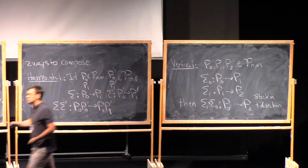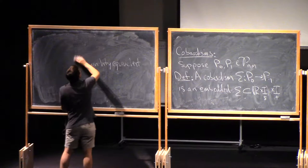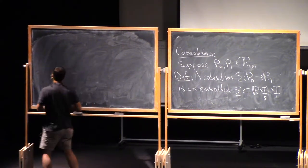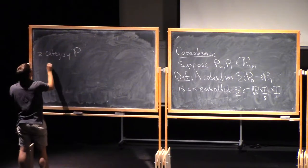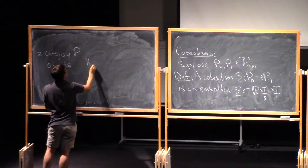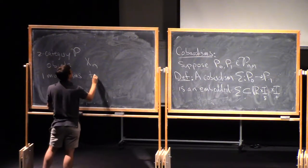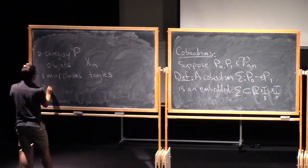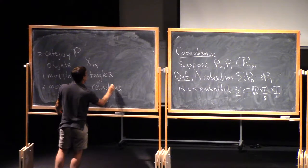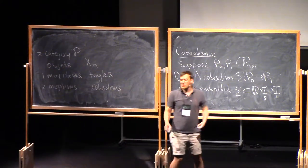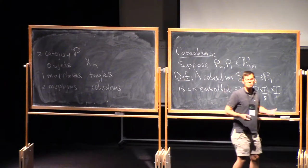The fancy way to say this, I have these two different sorts of composition, is to say that I have a two-category P, where the objects are the xn's, the one-morphisms are tangles, and the two-morphisms are cobordisms. The model thing that you should think of when you think of a two-category is this category of tangles.